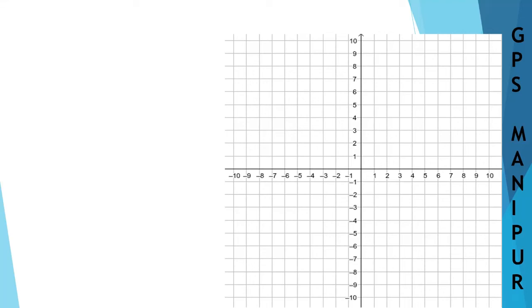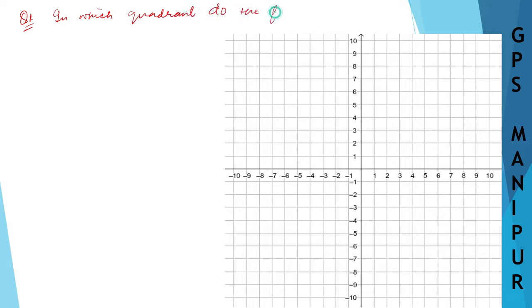Now we are doing exercise 3.1 coordinate geometry, question number 1. The question says: in which quadrant do the following points lie?